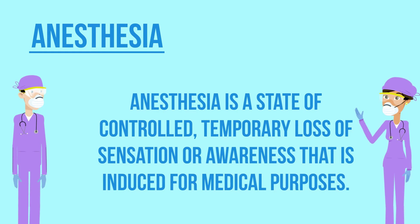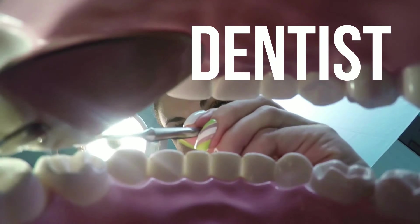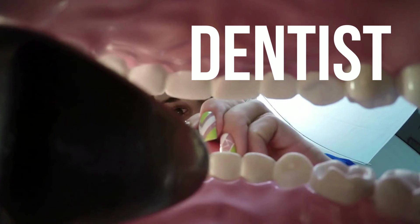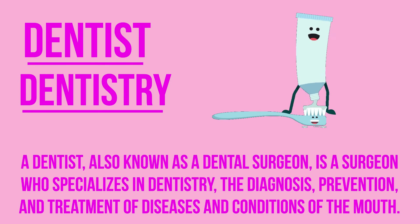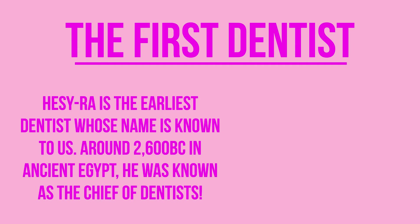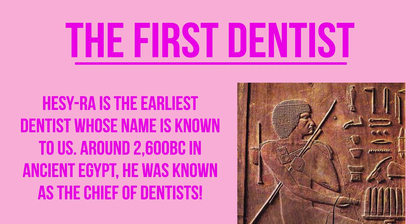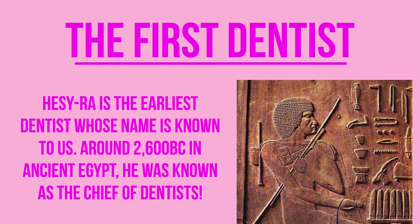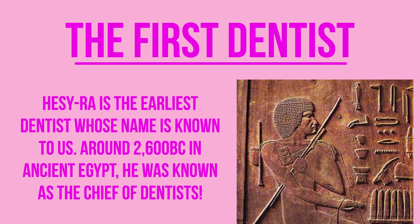Our next medical doctor is a dentist, who works in the area of dentistry. A dentist, also known as a dental surgeon, is a surgeon who specializes in dentistry — the diagnosis, prevention and treatment of diseases and conditions of the mouth. Hese Ra is the earliest dentist whose name is known to us. Around 2600 BC in ancient Egypt, he was known as the chief of dentists.